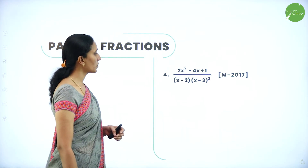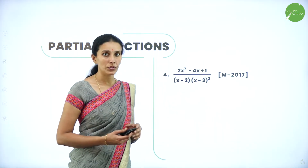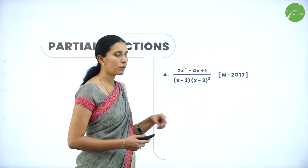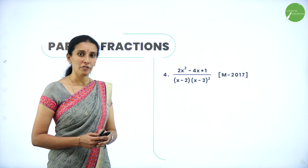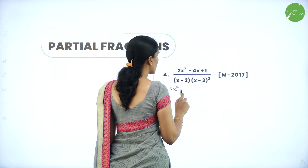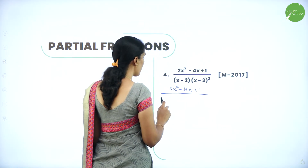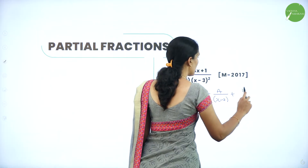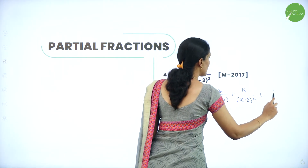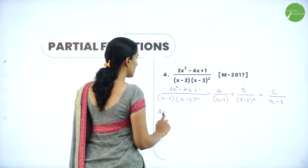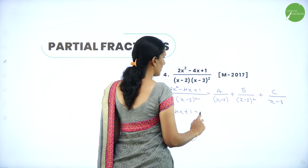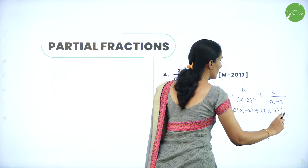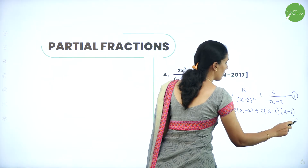Next we have (2x²−4x+1) divided by (x−2)(x−3)². The degree of the numerator is 2 and the degree of the denominator is 3, so it is clearly a proper rational function and we can resolve it. This becomes: (2x²−4x+1)/[(x−2)(x−3)²] = A/(x−2) + B/(x−3)² + C/(x−3). Multiplying through gives: 2x²−4x+1 = A(x−3)² + B(x−2) + C(x−2)(x−3). Take this as equation 2.